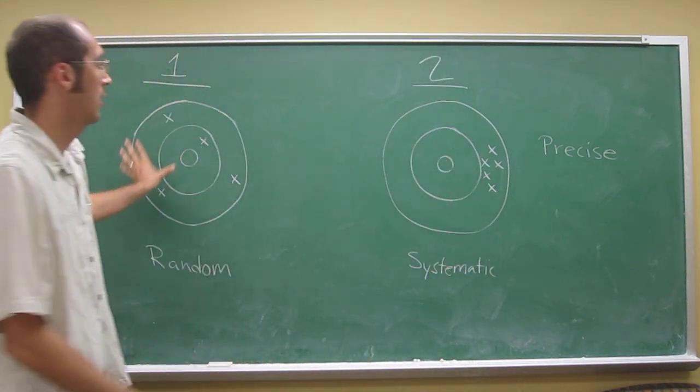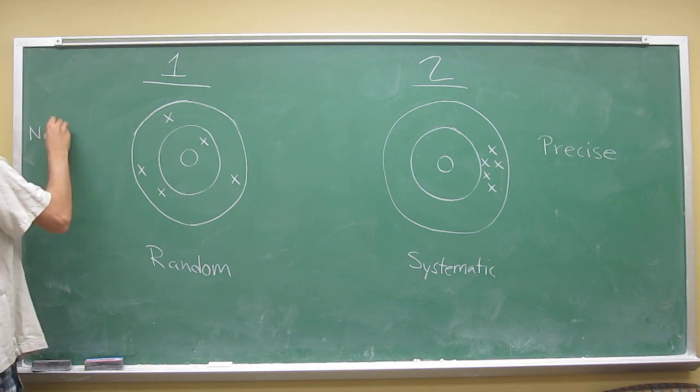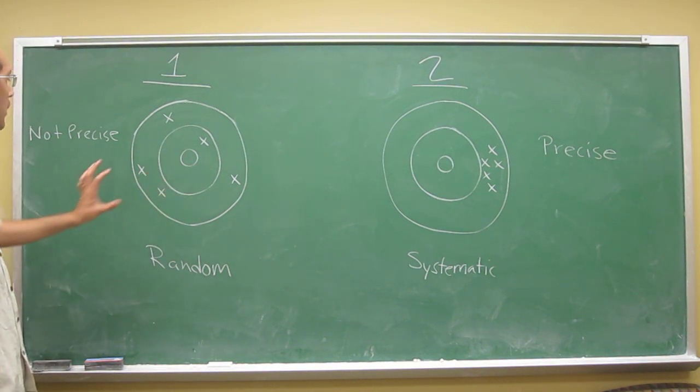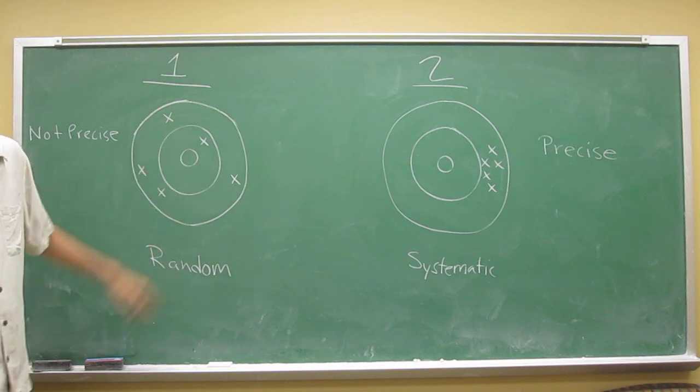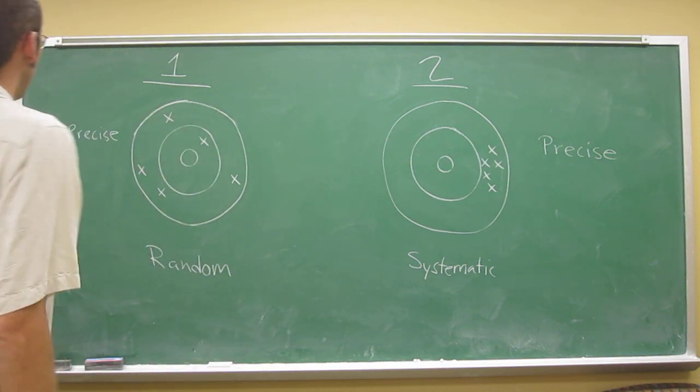This person is not precise at all. Why? Not because they're not hitting the bullseye, but because their placement of the darts isn't close, in a close bunch.